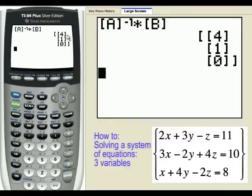And the resulting matrix are the answers to our equations: x is 4, y is 1, and z is 0.